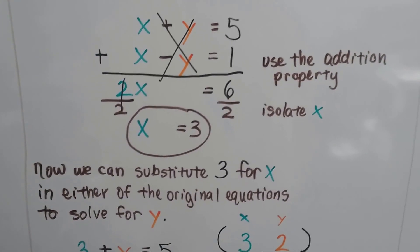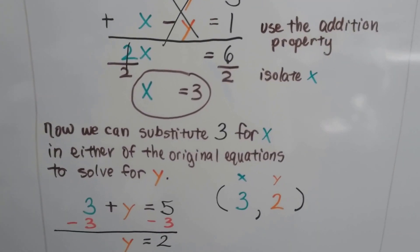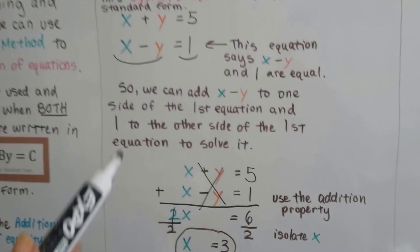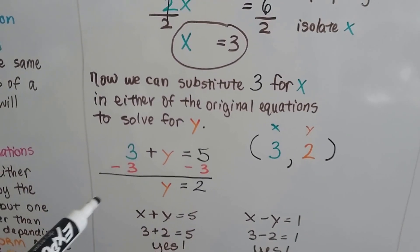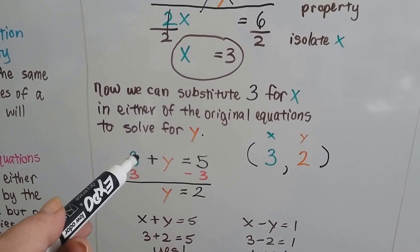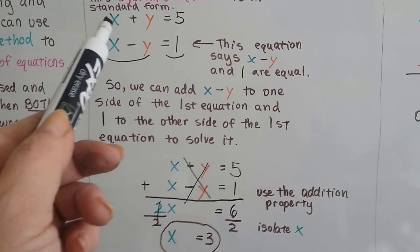Now we know x = 3, so we can substitute that 3 for x in either of the original equations. It doesn't matter which equation we choose. If we choose the first one, 3 + y = 5 is 3 being substituted for the x. It said x + y = 5, we just put the 3 there.